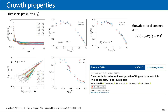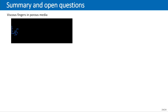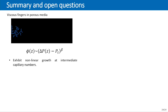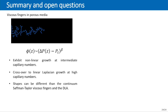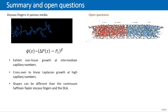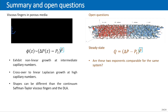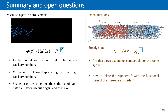In summary: we studied viscous fingers and found non-linear growth at intermediate capillary numbers crossing over to Laplacian growth at high capillary numbers. The shapes can differ from both Saffman-Taylor fingers and DLA. Open questions include whether the beta exponent from steady-state flow will be the same for the fingering case in the same system — since the origin appears to be the same disorder in capillary thresholds — and how to relate this exponent to different functional forms of this disorder. Thank you very much.